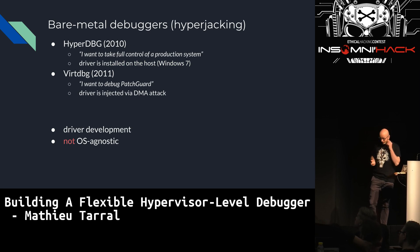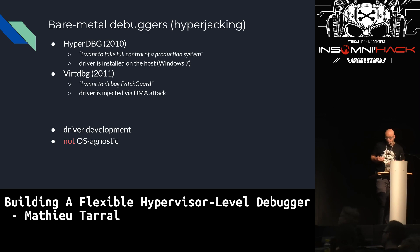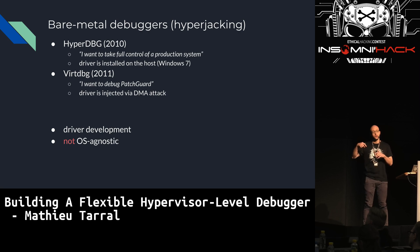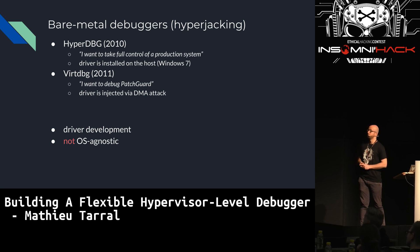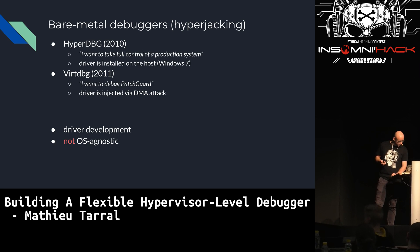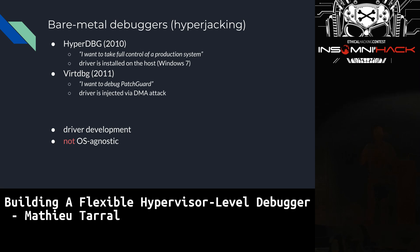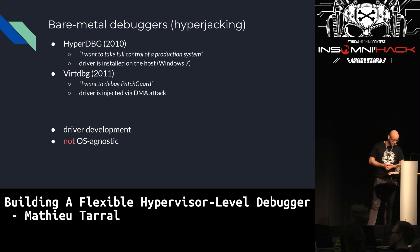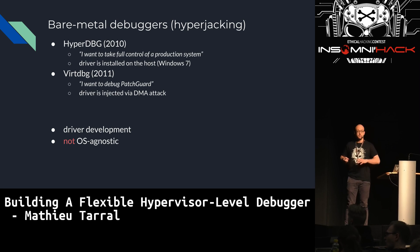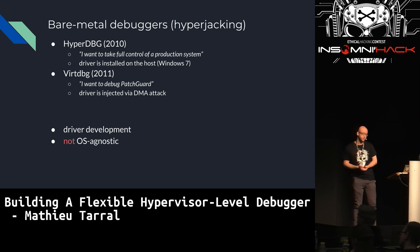Another category is bare metal debuggers that debug a physical machine using a hypervisor. First, there is hyperjacking — virtualizing your host on the fly by loading a driver that virtualizes the entire system. HyperDBG in 2010 wanted to debug production systems by pressing F12 to get a debugger appearing on your machine. VitrDBG wanted to debug PatchGuard using DMA attack. In both cases, the problem is you have to develop a driver for the OS to do this hyperjacking, so it's not OS-agnostic, which is why they were discontinued.